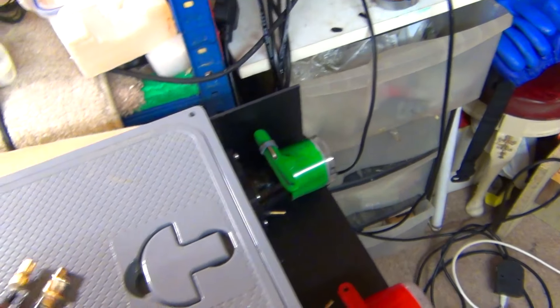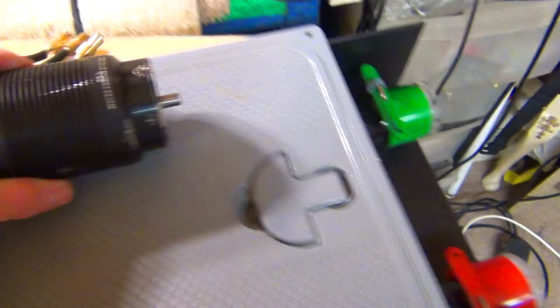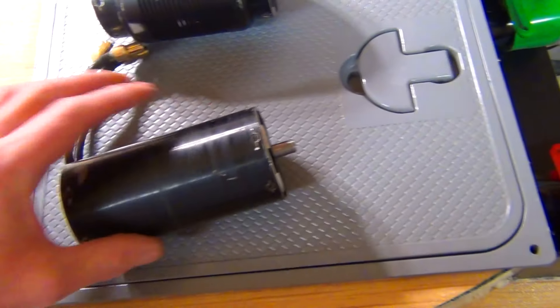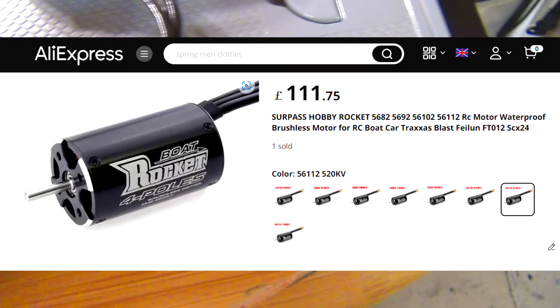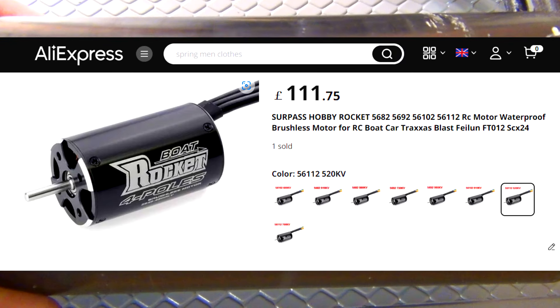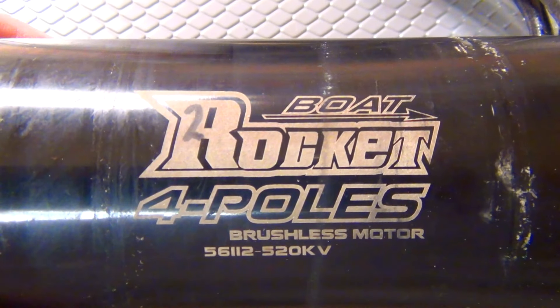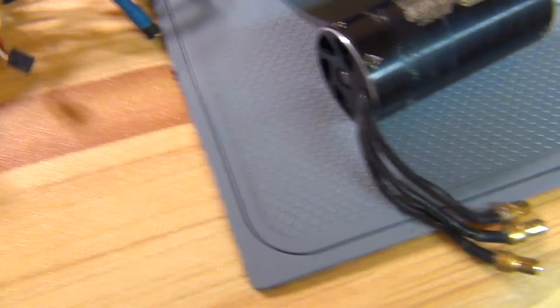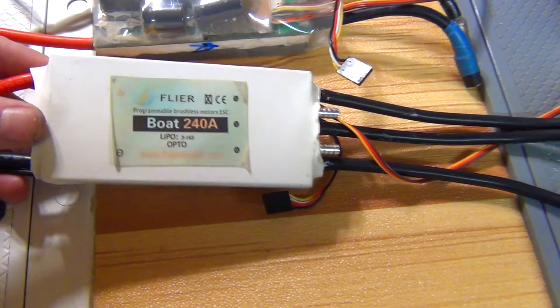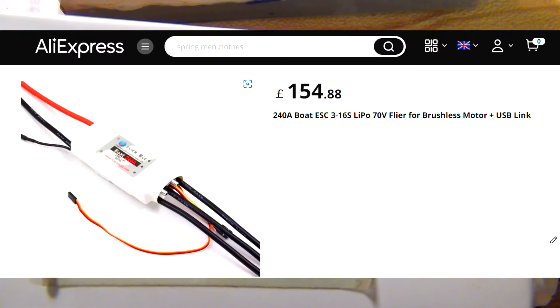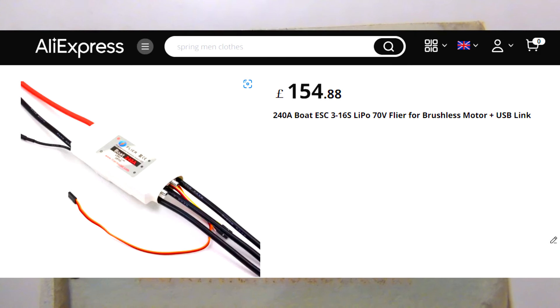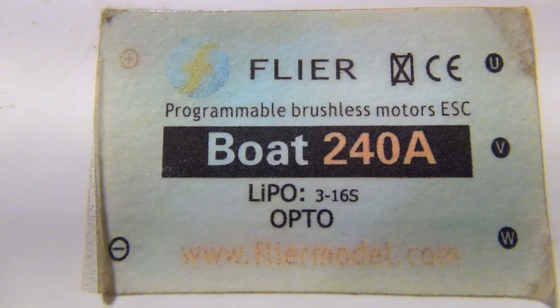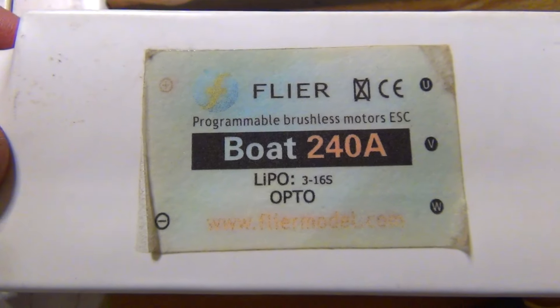The motors, hobby rocket, and then I've taken the sleeve off this one. There it is. 56.112. And then we've got the Flyer ESCs, two of these. 3 to 16 cells, 240 amp optical sensor.